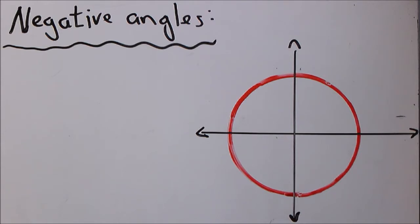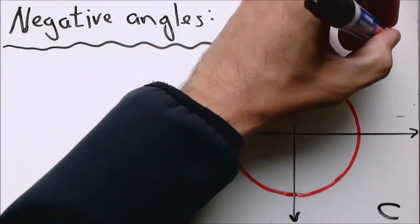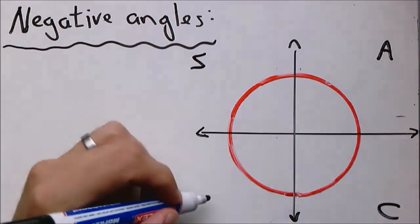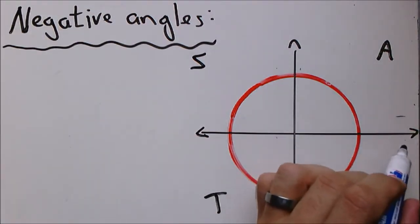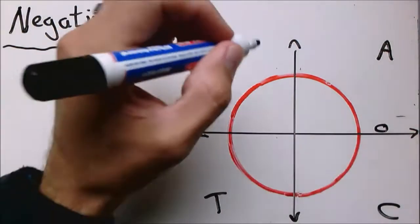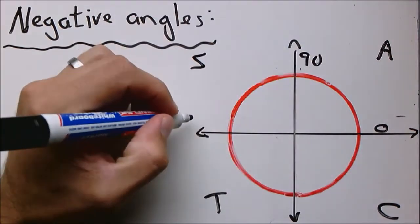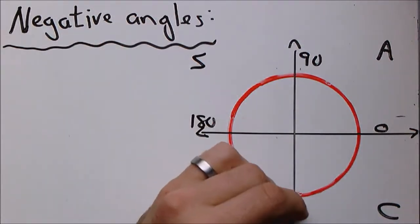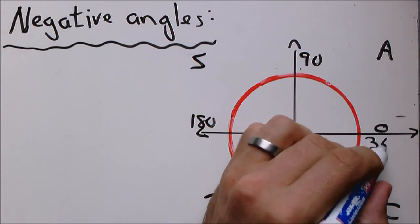Let's start with the CAST diagram as you know it. This is 0, 90, 180, 270, and zero is also 360.